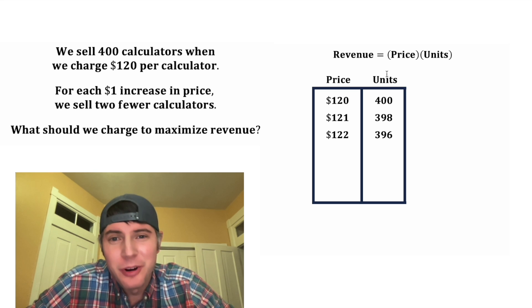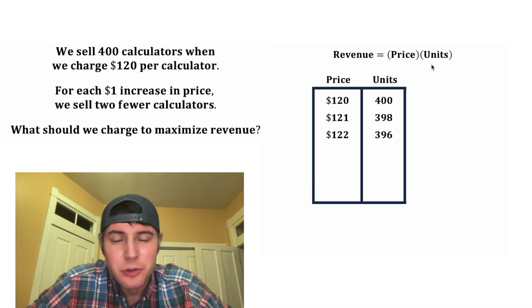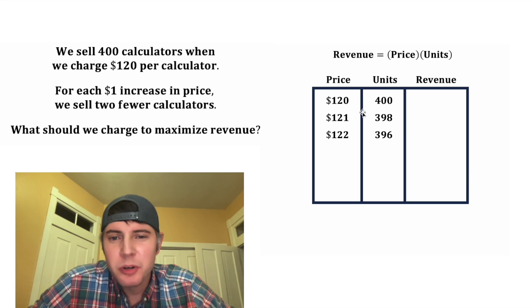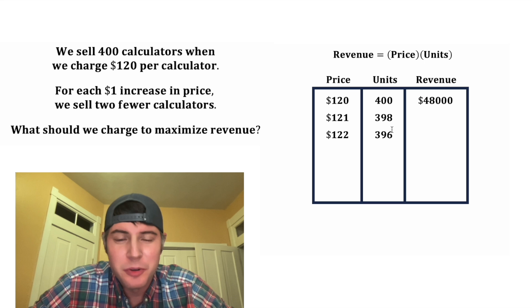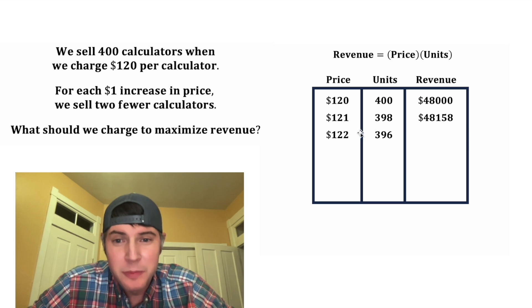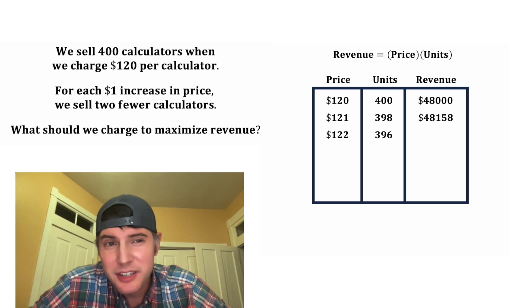So in order to find out the revenue, we need to do price times units. So we can make another column here for revenue. And $120 times 400 is equal to $48,000. And $121 times 398 is equal to $48,158. So we're making more money, which makes sense because we raised the price, but we did sell less units.